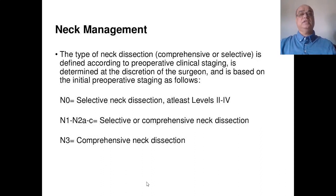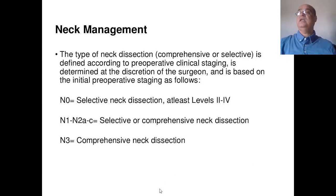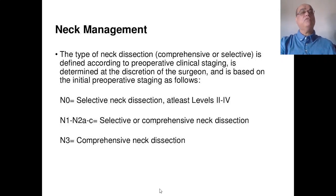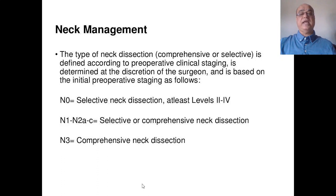For positive neck nodes: in N0, selective neck dissection at least from level 2 to 4 is performed, since the first echelon lymph nodes in oropharyngeal carcinomas are level 2, then 3 and 4. In N1 or N2a–c, selective or modified radical neck dissection is used. In N3, modified radical or radical neck dissection is required.